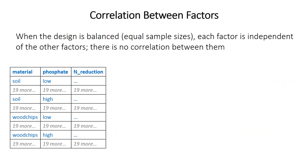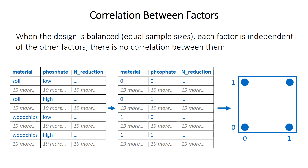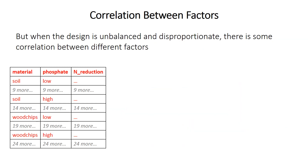Why are unbalanced designs problematic? When the design is balanced, each factor is independent of the other factors — there's no correlation between them. If we convert factor levels to numbers — soil as zero, wood chips as one, zero for low phosphate, one for high phosphate — we can plot the data and see 20 observations in each of the four combinations. There's no correlation. But when the design is unbalanced and disproportionate, there ends up being some correlation between the different factors.